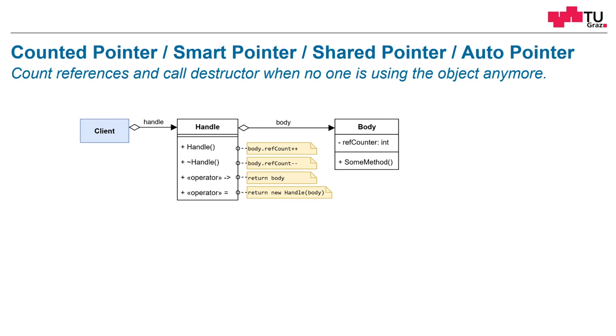The structure of the counted pointer looks like this. The client here is using some object and this object is here. This is the actual object we want to use. Here we want to call some methods, like this sum method, for example. Normally when we use it, we directly instantiate a pointer to this object and then we use it.